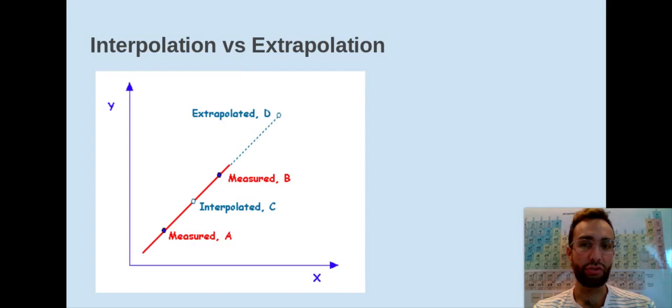So let's talk about interpolation and extrapolation. Notice here I have an image that shows the red line is the data that has been plotted, and then there's a dotted line to extend the data. Notice interpolated is on the red line, whereas extrapolated is beyond the red line. Take a minute and see if you can come up with definitions for each of these.